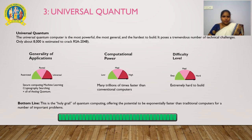The universal quantum computer is the most powerful, most general, and hardest to build, possessing a tremendous number of technical challenges. Only about 8,000 qubits are estimated to be needed to crack RSA-2048. Applications span secure computing, machine learning, cryptography, searching, and all analog quantum computing tasks. Computational power is very high — many trillions of times faster than a conventional computer — but it is extremely hard to build. This is the holy grail of quantum computing, offering the potential to be exponentially faster than traditional computers for a number of problems.